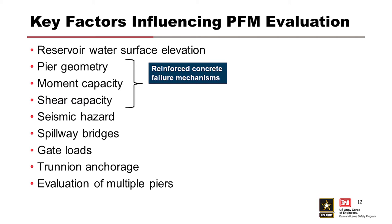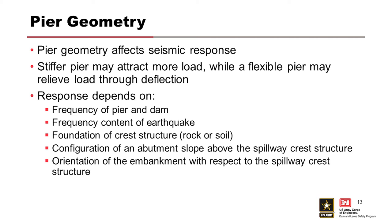We often estimate the risk for failure of one pier, but oftentimes there are multiple piers and you need to deal with multiple pier failure. The pier geometry affects the seismic response — a stiffer pier may attract more load while a flexible pier may relieve load and dissipate energy through deflection. This often depends on the frequency of the pier and dam versus the frequency of the earthquake. When those two are the same frequency, you get resonance and a larger response. The foundation, as we keep discussing, is critical to the response of the structure.